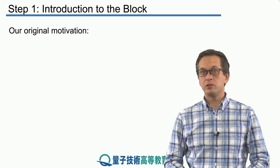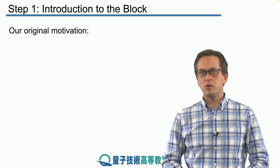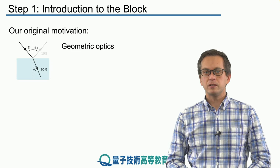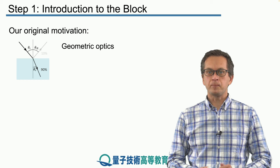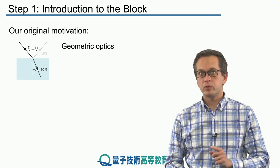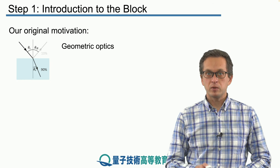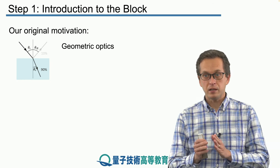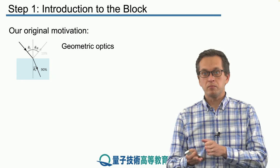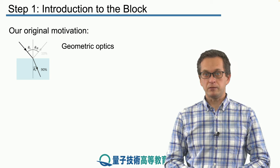Let's re-examine our original motivation. You may remember in module 1 on the overview of quantum communication, we were interested about geometric optics. In particular, we wanted to know how light propagates down fibre — what happens at the interface between two dielectric media, for example air and glass or some other dielectric media.